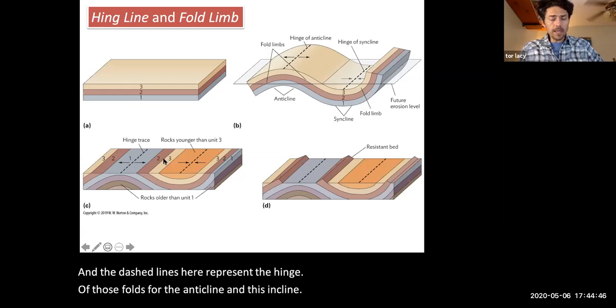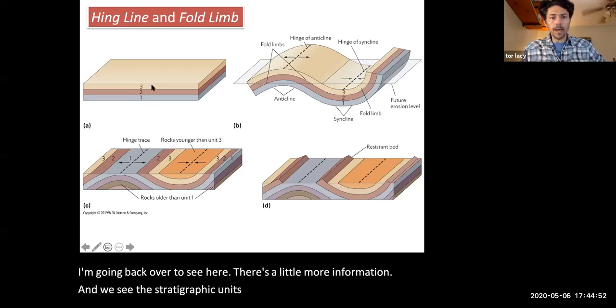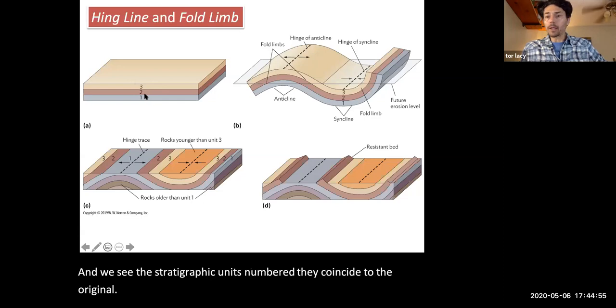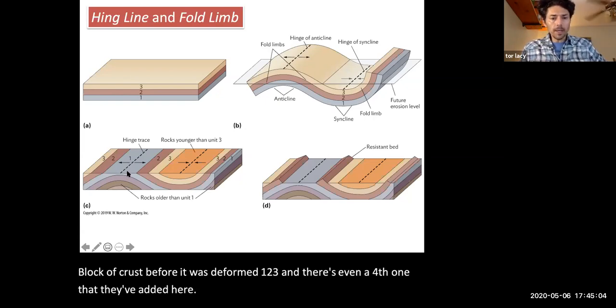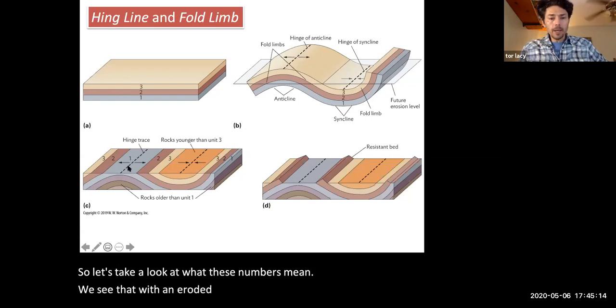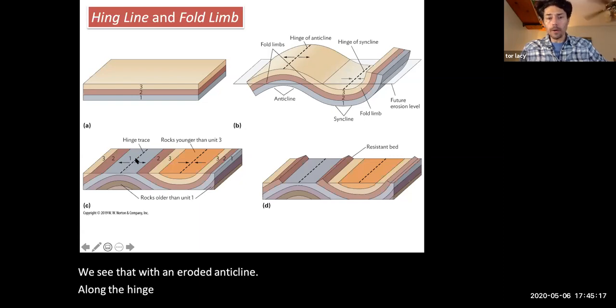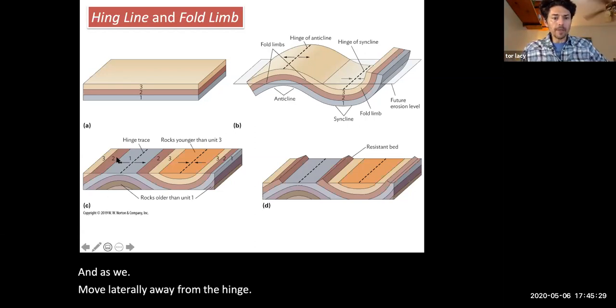And the dashed lines here represent the hinge of those folds for the anticline and the syncline. Now going back over to C here, there's a little more information. And we see the stratigraphic units numbered. They coincide to the original block of crust before it was deformed. One, two, three, and there's even a fourth one that they've added here. So let's take a look at what these numbers mean. We see that with an eroded anticline along the hinge, the older units are exposed.